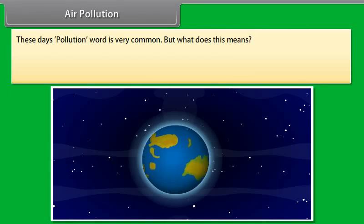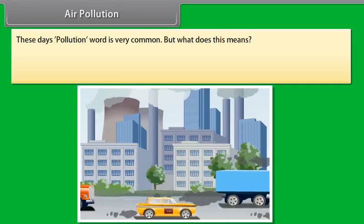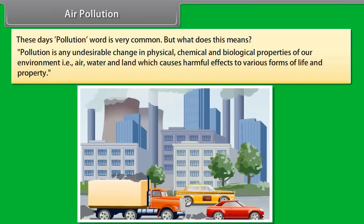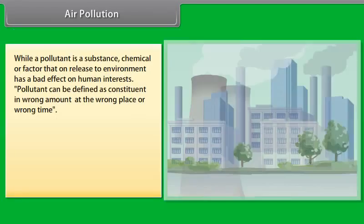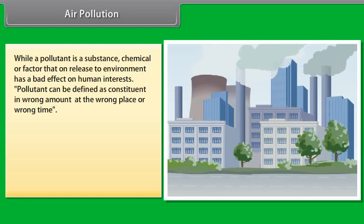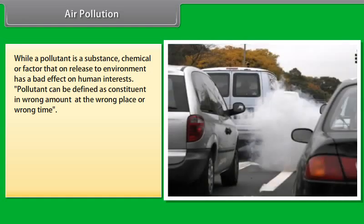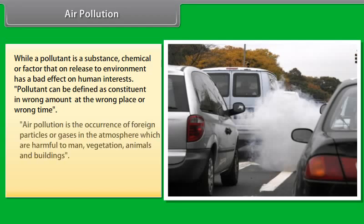Air pollution. These days, pollution word is very common. But what does this mean? Let me tell you. Pollution is any undesirable change in physical, chemical and biological properties of our environment, that is air, water and land, which causes harmful effects to various forms of life and property. While a pollutant is a substance, chemical or factor that unreleased to environment has a bad effect on human interests. Pollutant can be defined as constituent in wrong amount at the wrong place or wrong time. Pollution is the occurrence of foreign particles or gases in the atmosphere which are harmful to man, vegetation, animals and buildings.